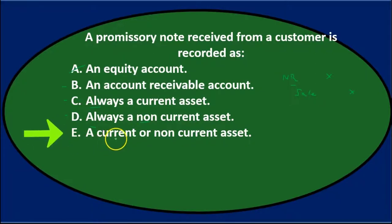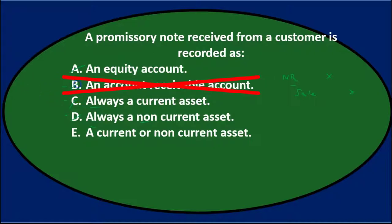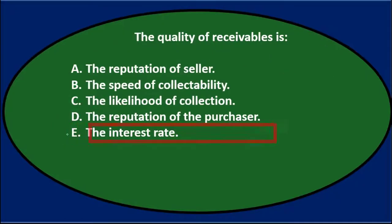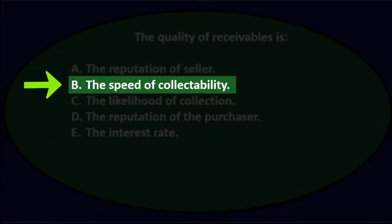So the note receivable could be current or non-current, just depending on the term of the note. That eliminates C and D. B says accounts receivable — notes receivable and accounts receivable are similar in nature but not the same, so it's not B. The best answer is E. Once again, the question is: a promissory note received from a customer is recorded as E) a current or non-current asset.